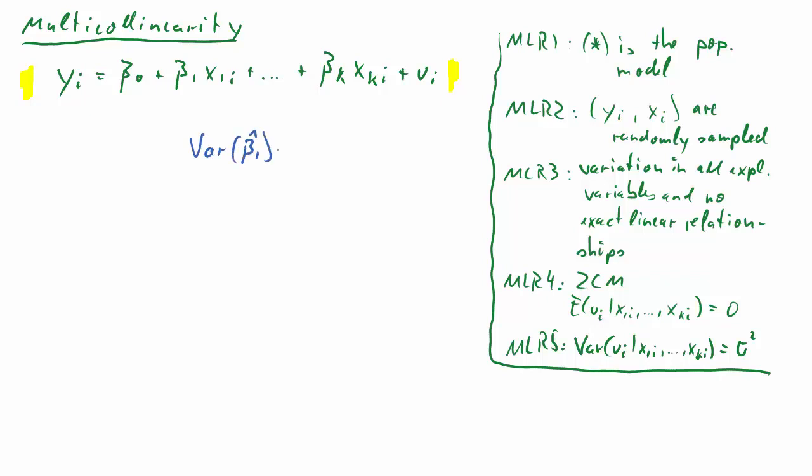What we will be eventually interested in is the variance of a particular coefficient estimate, for instance, beta 1. Now, in a simple regression, if you had a regression with only y as dependent and constant and x1 as explanatory variable, the variance for beta 1 hat from that regression would be sigma squared over SST1, where SST1 is just the sum of squared totals. And here's the definition.